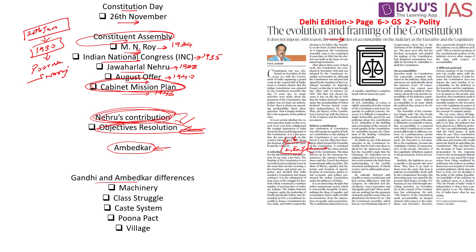As we speak about Ambedkar, we also have to know that he had differences with Gandhiji as well — this can be a prospective question in the GS Paper 1 mains examination. When it comes to similarities, both Gandhi and Ambedkar understood that the depressed classes were not seen as equal to the so-called upper classes, identifying that caste hierarchy led to grave injustice perpetuated on the lower castes.